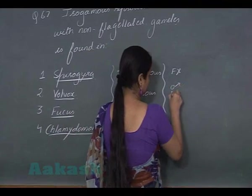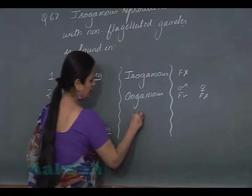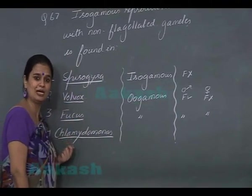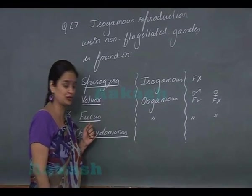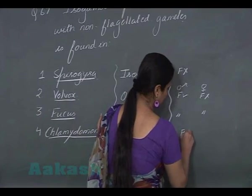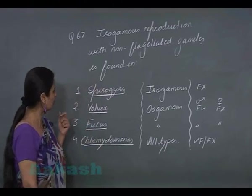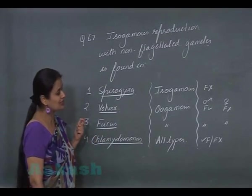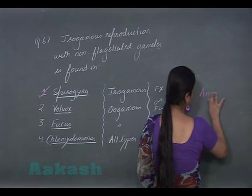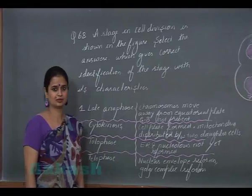In Fucus, reproduction is again oogamous — male gametes are flagellated and the female is without flagella. In Chlamydomonas, all types of sexual reproduction are present, meaning gametes can be flagellated or non-flagellated. Since the question asks for an organism with isogamous reproduction and non-flagellated gametes, the right answer is Spirogyra — option 1.